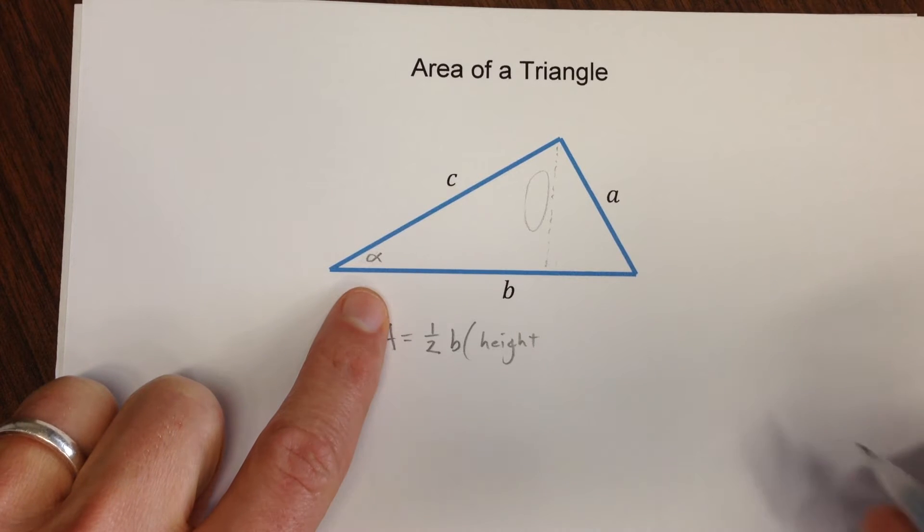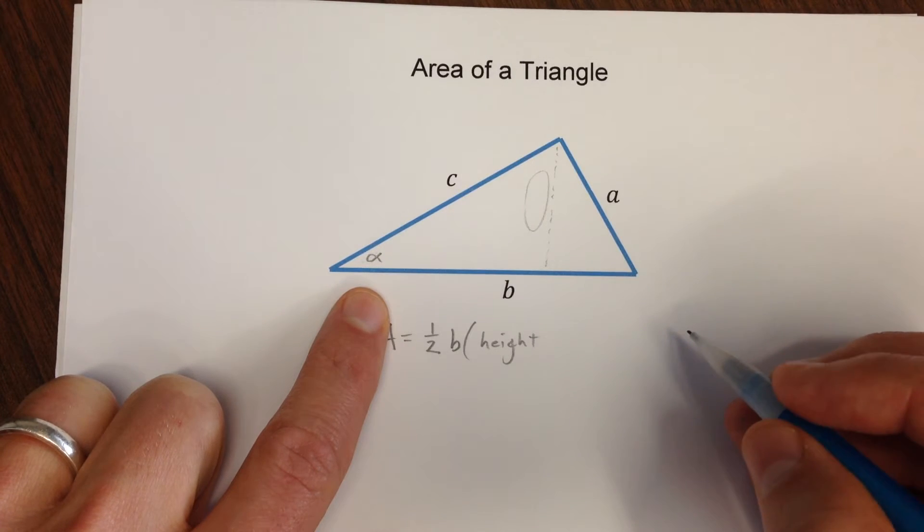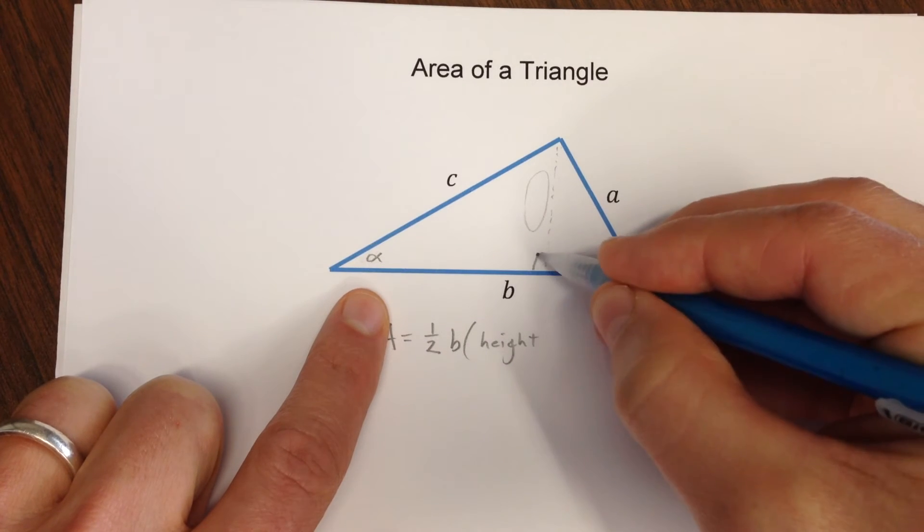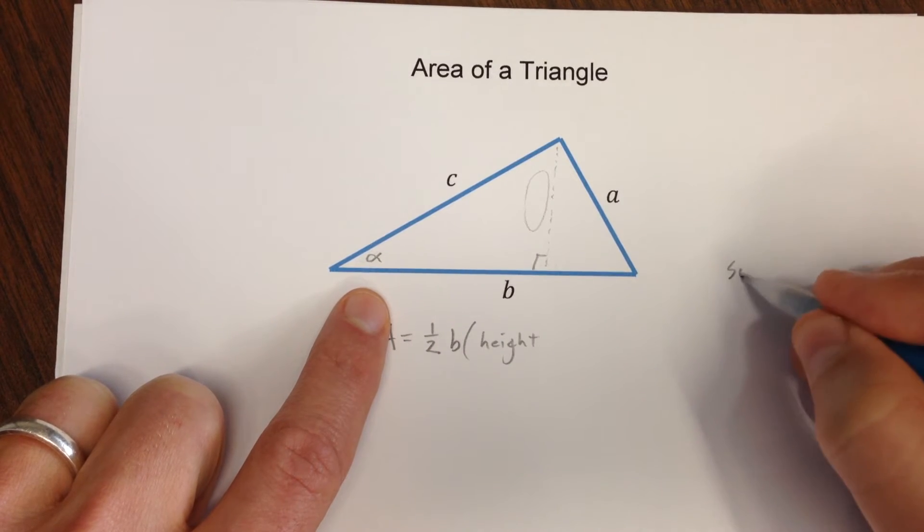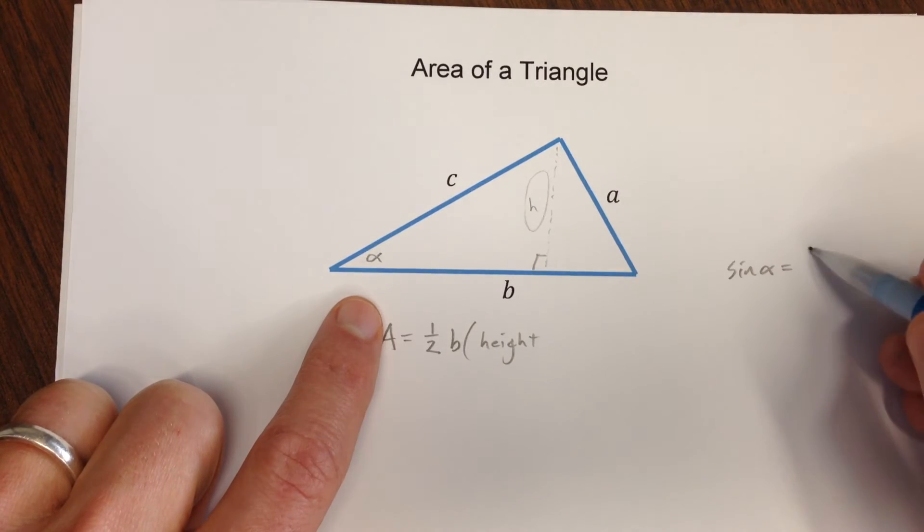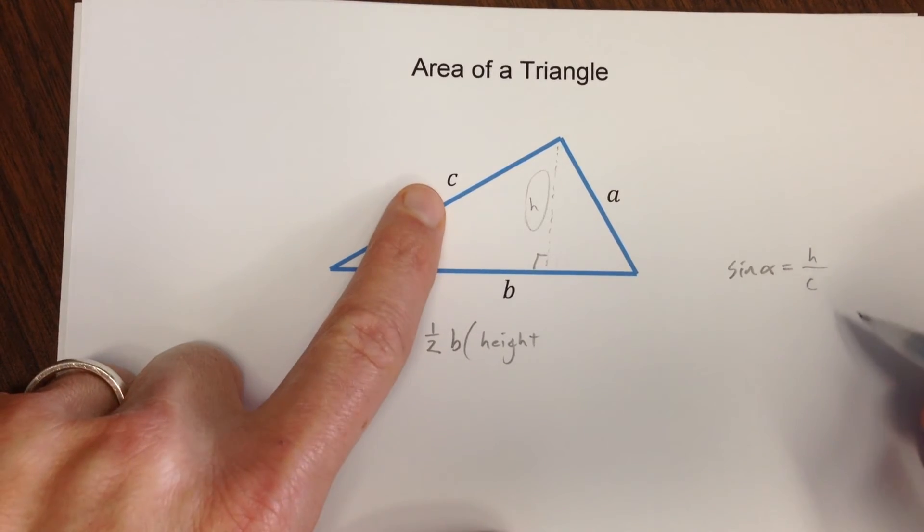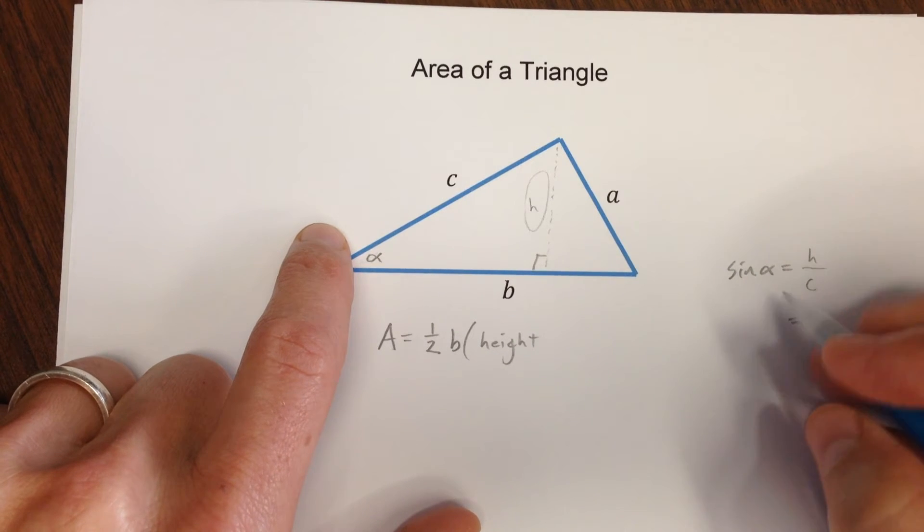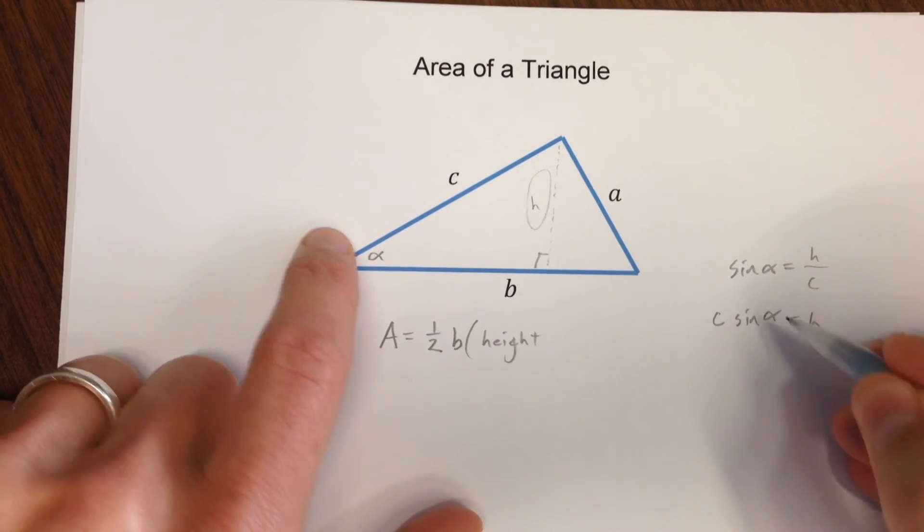Well you could look at this right triangle, and you could say sine of alpha equals this height H over the hypotenuse C, so H is going to equal C sine alpha.